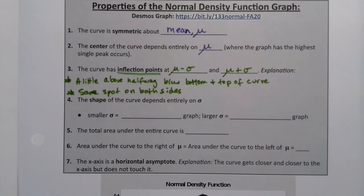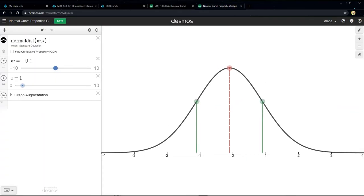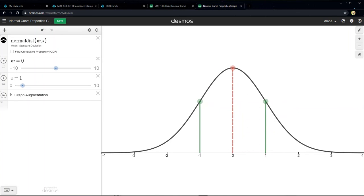Now, what I really am interested in, because the center of the curve part is pretty easy to see, but that shape of the curve depends entirely on sigma. Let's show what that means. All right. So let me go back and make this 0. There it is.